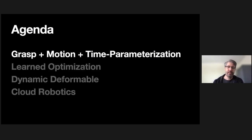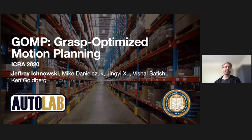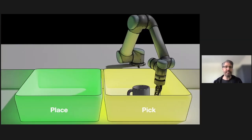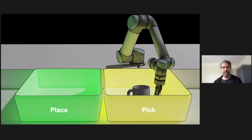Here's the agenda: I'm going to talk about the integration of grasp motion and time parameterization, then get into learned optimization, dynamic deformable, and cloud robotics. Starting off, one of the things we've really experienced in the past couple of years is this huge demand increase for e-commerce. We started thinking about how to keep up with the demand created on robots in logistics operations. A lot of it really comes down to the pick-and-place operation — how do you quickly pick up an object and place it in the desired location, whether bin to bin, shelf to shelf, or some other combination?